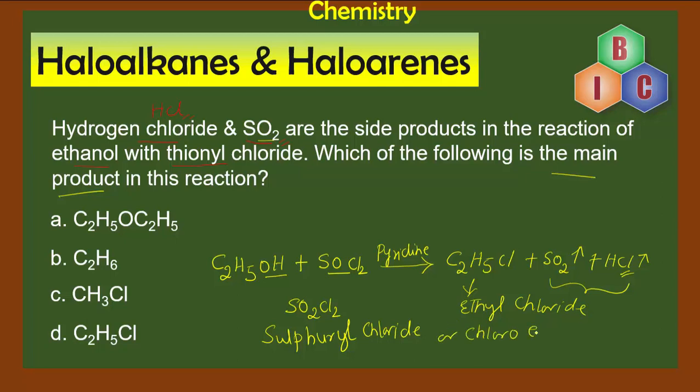Its IUPAC name will be chloroethane. This process we call Darzen's process.